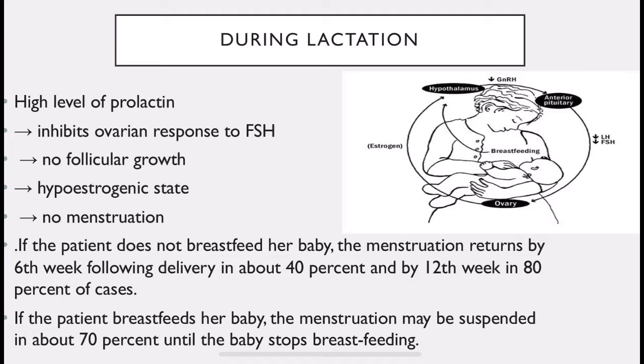If the woman is breastfeeding, menstruation will be stopped in 70% of cases as long as she is breastfeeding. To summarize: if she is not breastfeeding, menses return by 1.5 months in 40% and by 3 months in 80%. If she is breastfeeding, menses will not return in 70% until she stops.